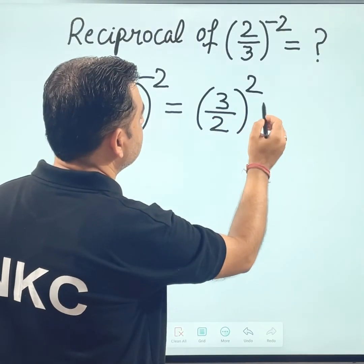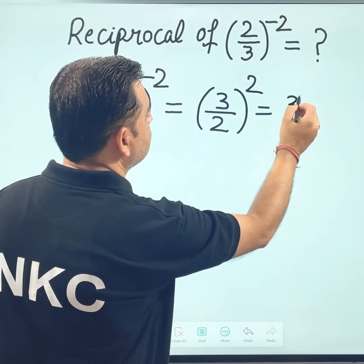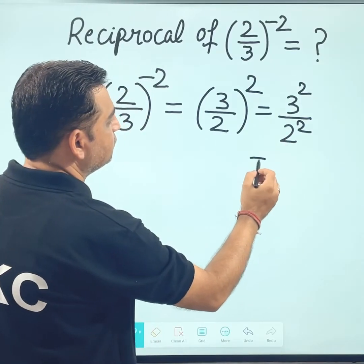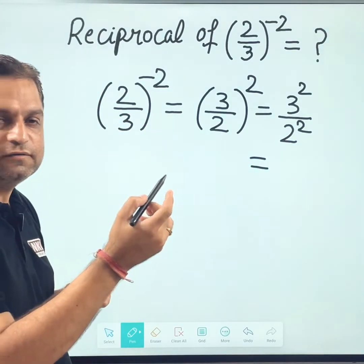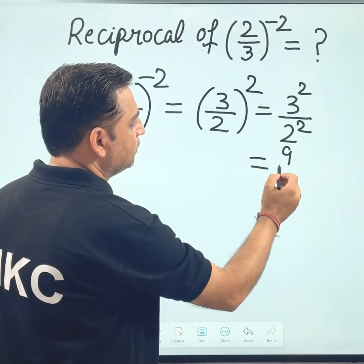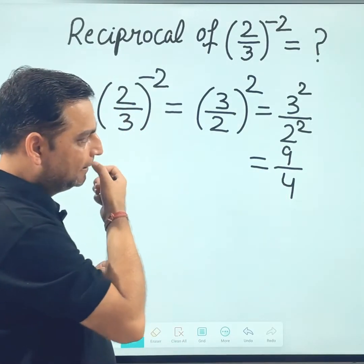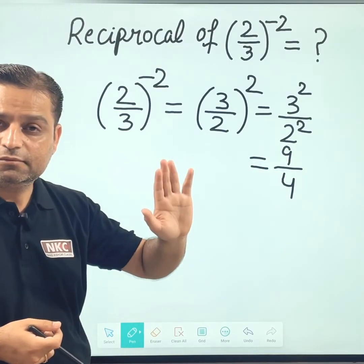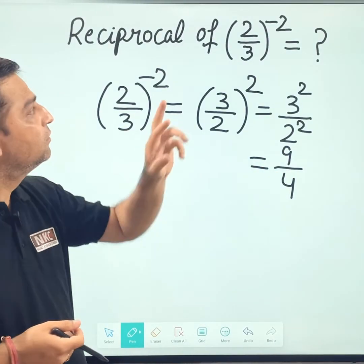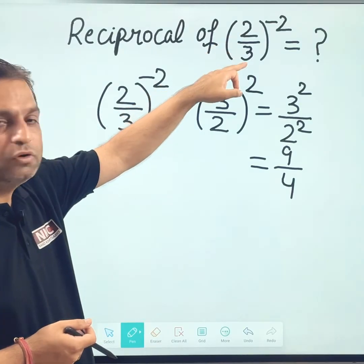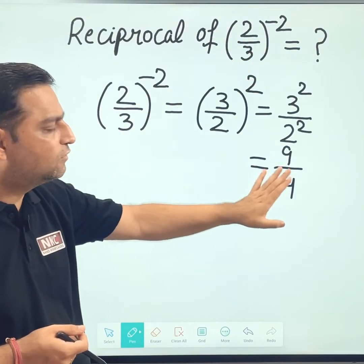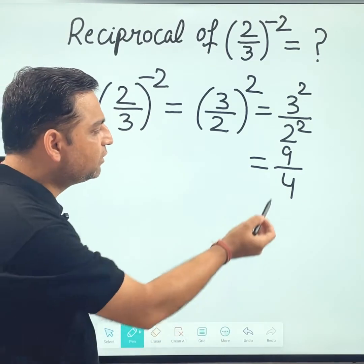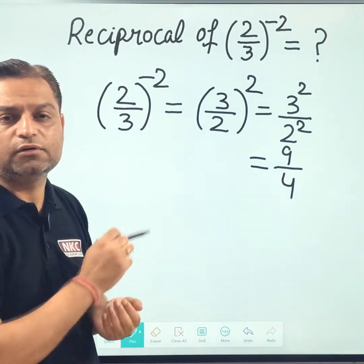And 3 over 2 squared means this is equal to 3 squared upon 2 squared, which is further equal to 9 upon 4. That means my given value is 9 upon 4. So the given value 2 over 3 to the power minus 2 is nothing but 9 upon 4. That means I need to find the reciprocal of 9 over 4 only.